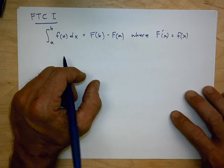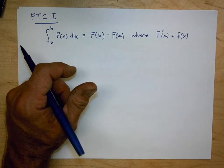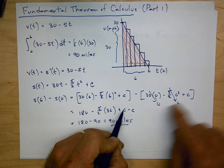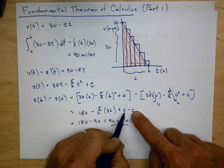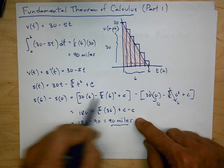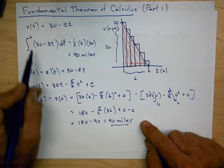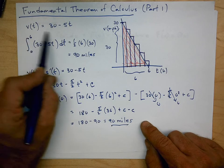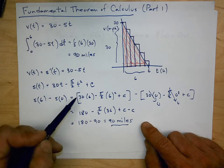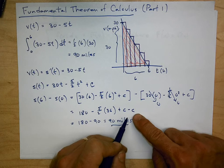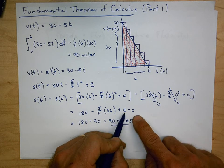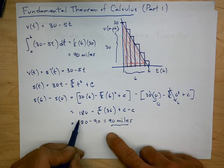Notice that the plus C's canceled. When we're finding the definite integral using the antiderivative — using the Fundamental Theorem of Calculus — we won't need the plus C, because we'll always have this case where those constants cancel.